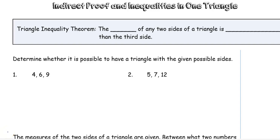We are starting our new unit. Unit 5 is going to be on triangle properties. We're going to start with just the basic parts of the triangle. The first thing is the Triangle Inequality Theorem, which says that the sum of any two sides of a triangle must be greater than the third side.